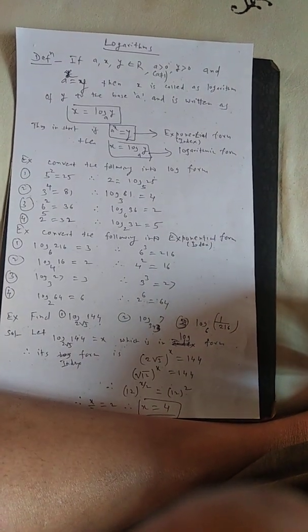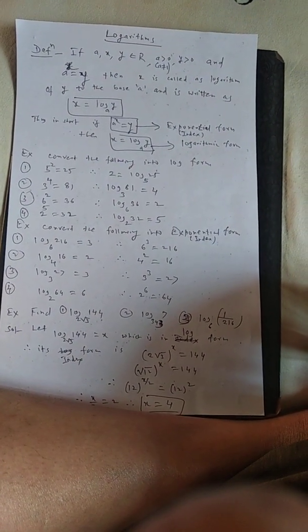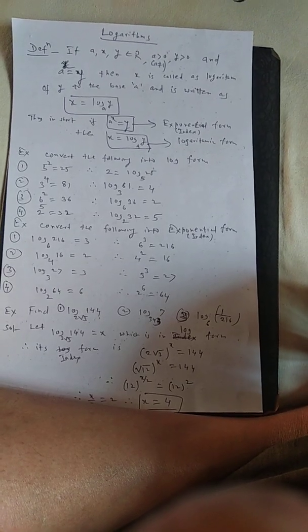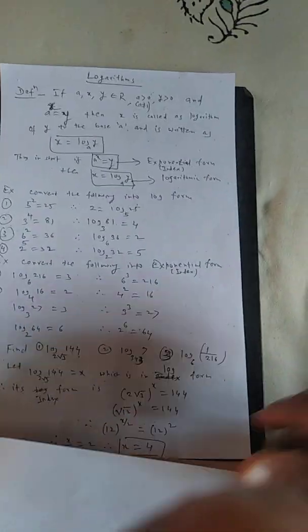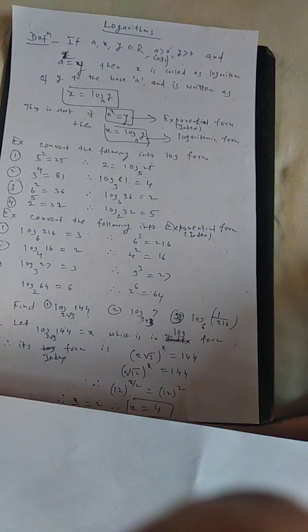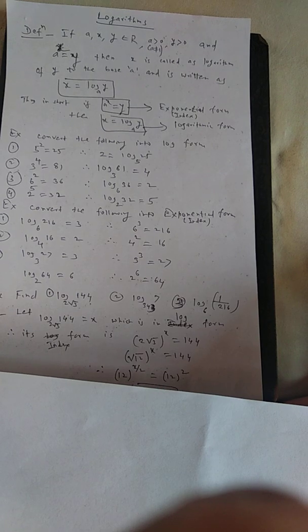In the last lecture, we were talking about determinants, in which we have seen the definition of determinant, second order and third order determinants, their expansions, Cramer's rule, consistent equations, and some properties of determinants. So in this lecture, we will discuss about logarithms.